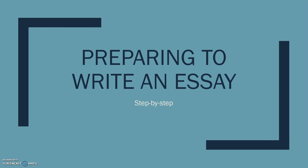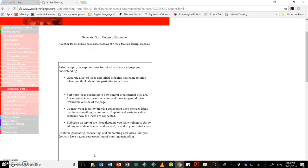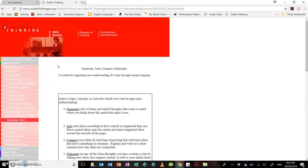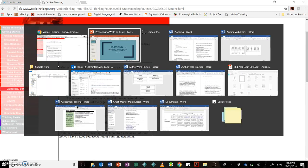To provide a bit more context, I've actually devised this process as a result of a bit of research and looking into this thinking routine called Generate, Sort, Connect and Elaborate. This has been devised by the Visible Thinking section of Project Zero, which is a project started by the Harvard Graduate School of Education. It's a thinking routine that can be applied to many different aspects of learning, but I find it quite useful in terms of helping students to thoughtfully think through an essay topic and preparing to write on it.